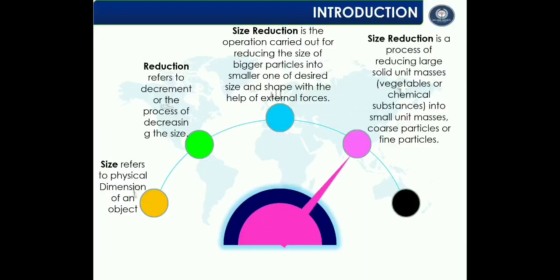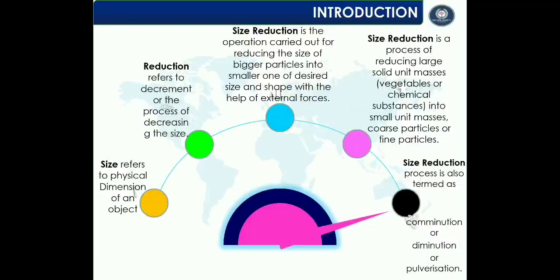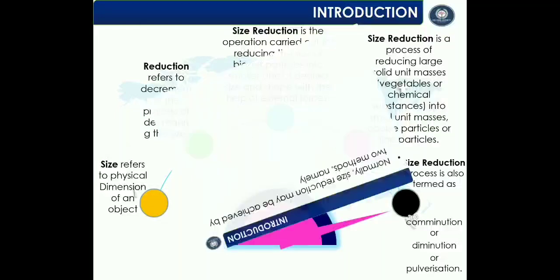Size reduction is also the process of reducing large solid unit masses — for example, vegetables or chemical substances — into small unit masses, coarse particles, or fine particles. Size reduction is also termed as comminution, diminution, or pulverization.